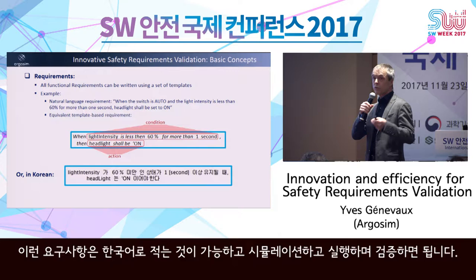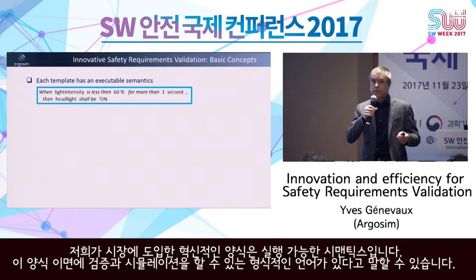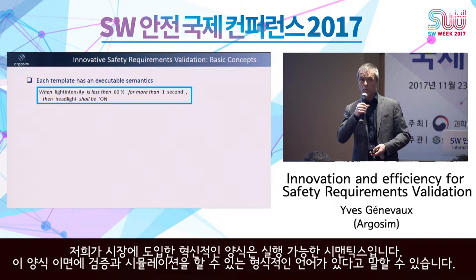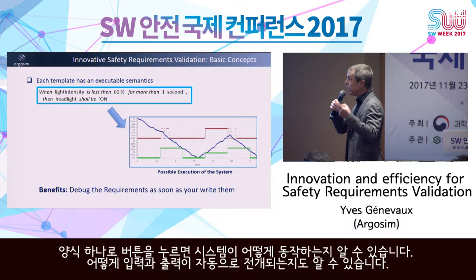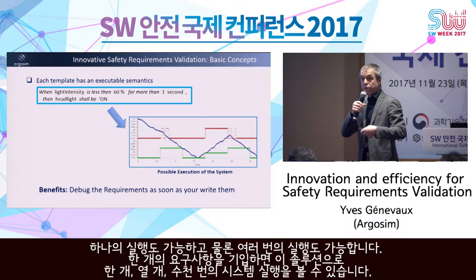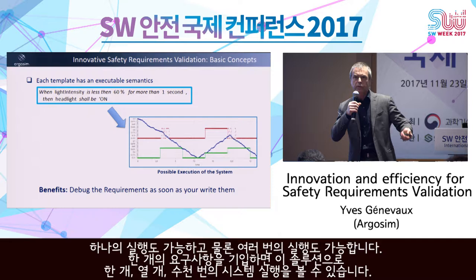The templates in our innovation have an executable semantics. Behind them, there is a formal language which enables verification and simulation. From a single template, you can press a button and see how the system is going to behave — how inputs and outputs will evolve automatically. The solution will show you one, ten, or thousands of possible executions of the system as soon as you have written a single requirement.